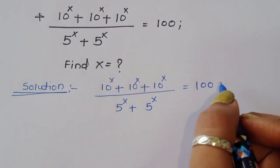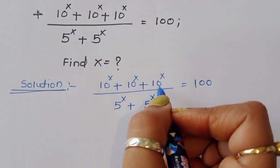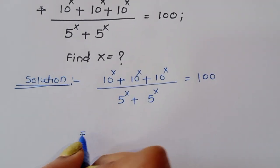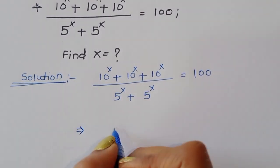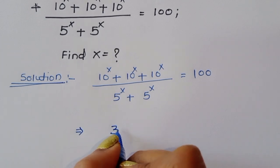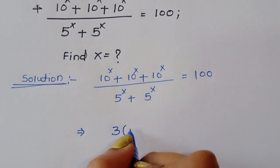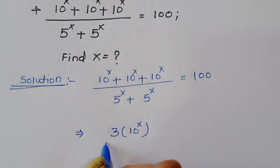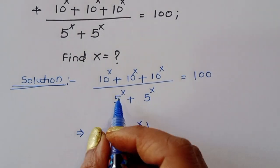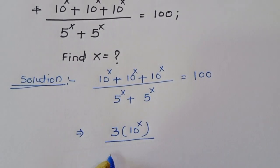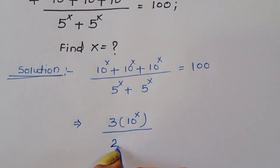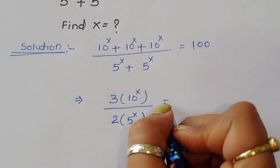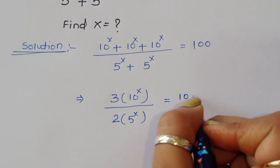This is the question. If we add the terms in the numerator, we can write 3 times 10^x. So we have 3 times 10^x divided by 5^x plus 5^x, which is 2 times 5^x, is equal to 100.